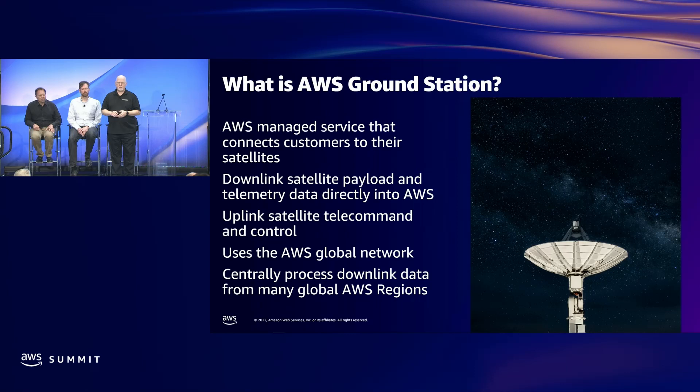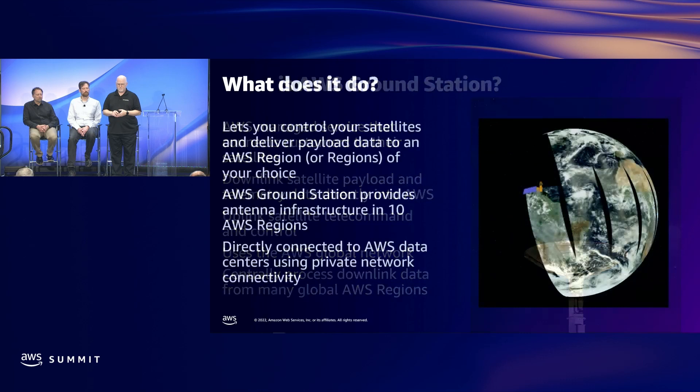AWS Ground Station is a fully managed service that we launched in 2019 to give our customers an alternative to building their own Ground Station infrastructure. AWS Ground Station takes advantage of AWS features like our global network and our serverless and event-driven services to give you fast and cost-effective ways to build on your satellite's capabilities.